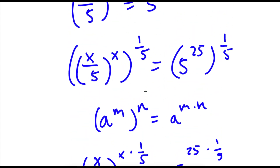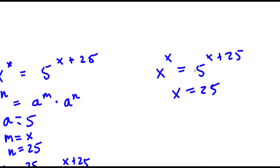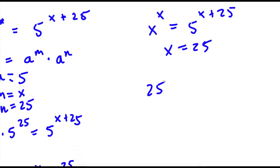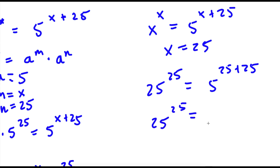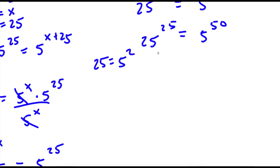Now, to check: our original equation was x to the power of x is equal to 5 to the power of x plus 25. We know that x is equal to 25, so if I plug in 25 for x, I get 25 to the power of 25 is equal to 5 to the power of 25 plus 25. Now 25 plus 25 is 50, so 25 to the power of 25 is equal to 5 to the power of 50. Now 25 is the same as 5 squared, so I'm going to replace 25 with 5 squared, giving me 5 squared to the power of 25 is equal to 5 to the power of 50.